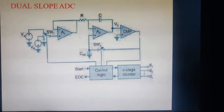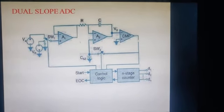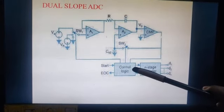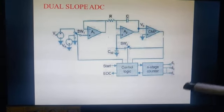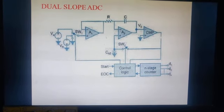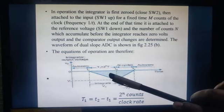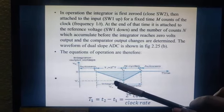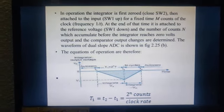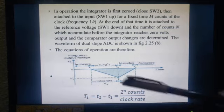Now let us understand how this dual-slope ADC is used to convert an analog signal into a digital signal. Before the start signal is applied, switch SW1 is connected towards the ground and SW2 switch is closed. Whenever we give a start signal, the region from 0 to T1 represents auto zero mode. Here T1 represents we are going to operate the start operation.